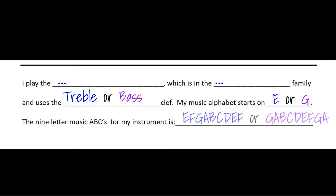For your instrument, if you're treble clef, the nine letters start on E: E, F, G, A, B, C, D, E, and F. If you're bass clef, you would write G, A, B, C, D, E, F, G, and A. Again, you can always pause if you need more time to write.